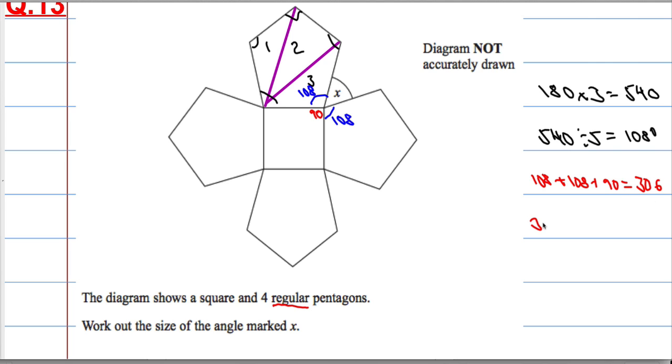And now I need to do 360 degrees take away 306, because remember the angles at a point - and there's your point - all the angles at a point add up to 360, which is going to leave me with 54 degrees. So X is 54 degrees.